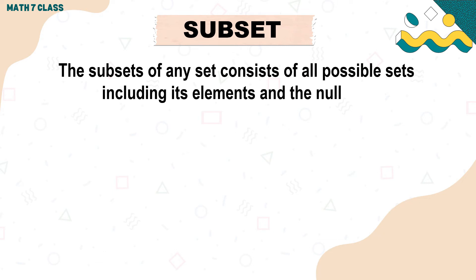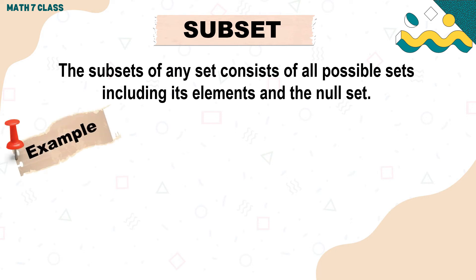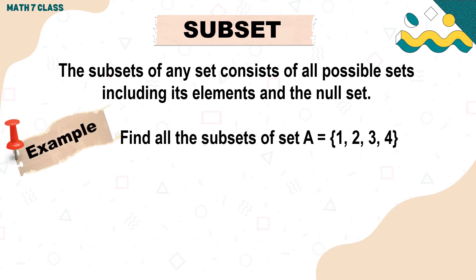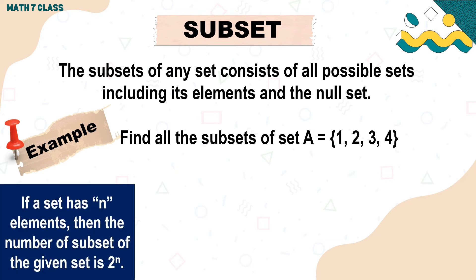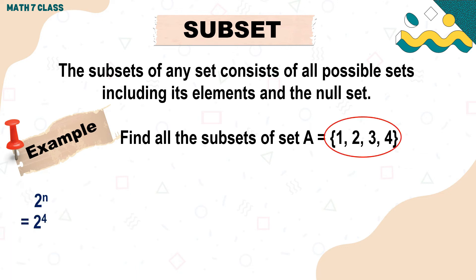The subsets of any set consist of all possible sets including its elements and the null set. For example, find all the subsets of Set A whose elements are 1, 2, 3, and 4. If a set has n elements, then the number of subsets is 2 to the n. So 2 to the 4th equals 2 × 2 × 2 × 2 = 16. Therefore, Set A has 16 subsets.